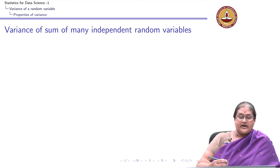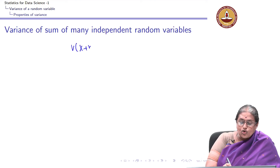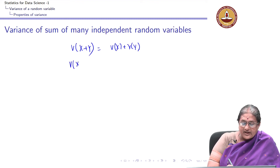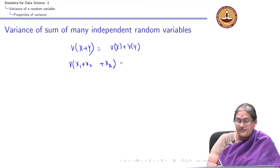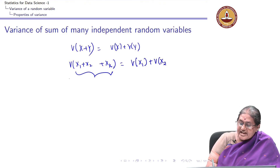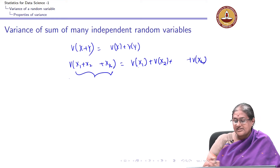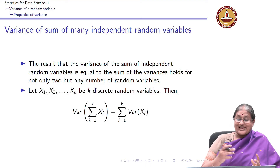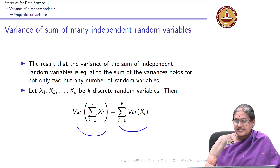I can extend this property — that the variance of the sum of two independent variables is the sum of variances — to many independent variables. In particular, if I have x1, x2, ..., xk which are k independent random variables, the variance of their sum is the sum of the individual variances. Variance of sum is sum of variances.